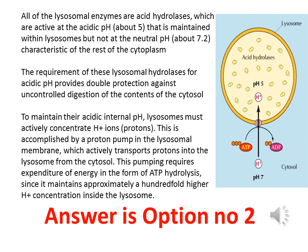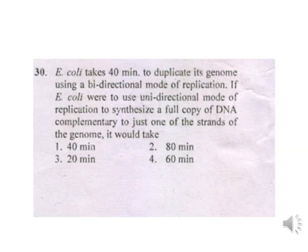To maintain the internal pH, the lysosome must actively concentrate H+ ions. This is accomplished by a proton pump in the lysosomal membrane, which actively transports protons into the lysosome from the cytosol. The pump requires ATP hydrolysis for its function. So the answer will be option number two: ATP-powered proton pump in the lysosomal membrane.